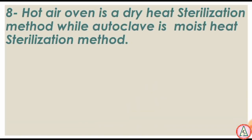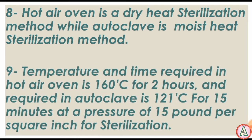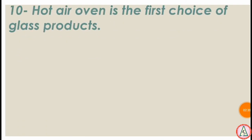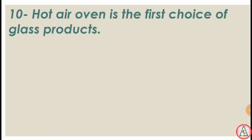Hot air oven is a dry heat sterilization method, while autoclave is a moist heat sterilization method. The temperature and time required in a hot air oven is 160 degrees centigrade for two hours. For autoclave, it is 120 degrees centigrade for 15 minutes at a pressure of 15 pounds per square inch.